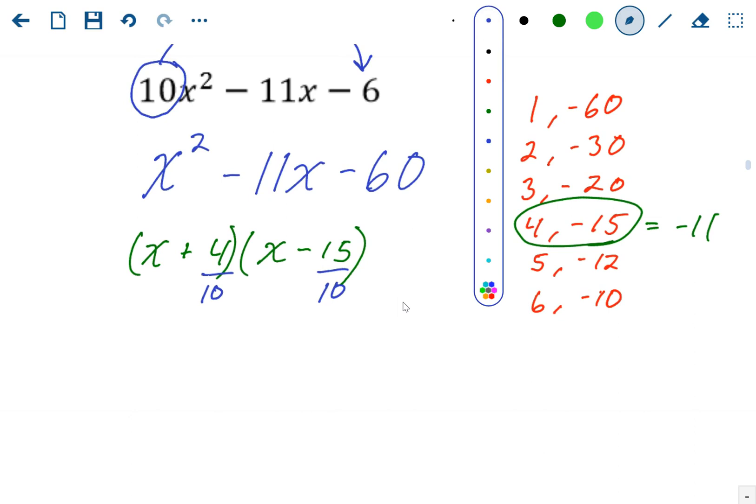Now we're going to simplify those fractions. 4 over 10 simplifies to 2 over 5. And 15 over 10 will simplify to 3 over 2.